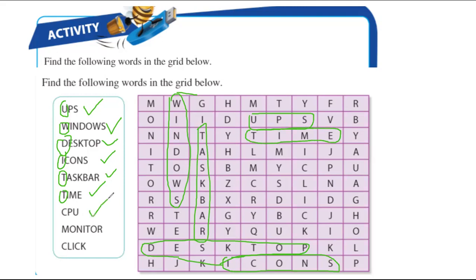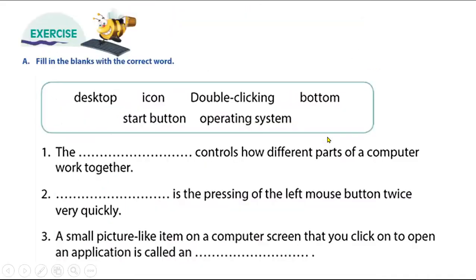Next, 'CPU' — there is CPU. Then 'Monitor' — the first letter is M. Let's find it, and here all the letters are here — monitor. Then we have the letter C for 'Click'. Where is the word click? First letter is C — I found C here but no L around it. Here is the click. We use this C two times for CPU and click. Let's go to the next exercise.